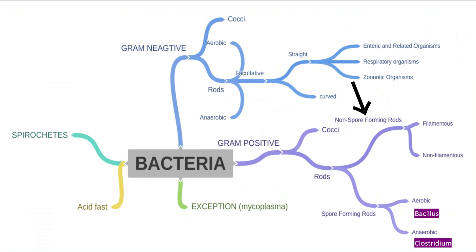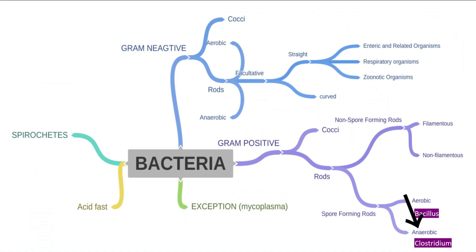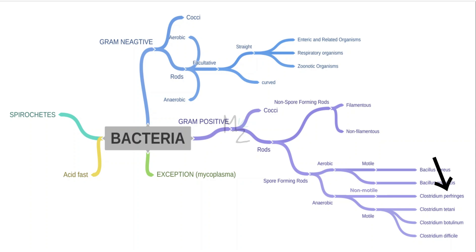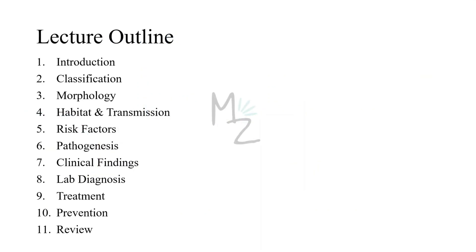Gram-positive bacteria are further classified into cocci and rods. The rods are subdivided into non-spore-forming and spore-forming, which are further classified into aerobic — for example Bacillus — and anaerobic — for example Clostridium. The motile anaerobic rods include Clostridium tetani, Clostridium botulinum, and Clostridium difficile.